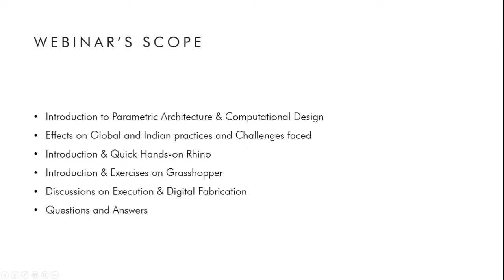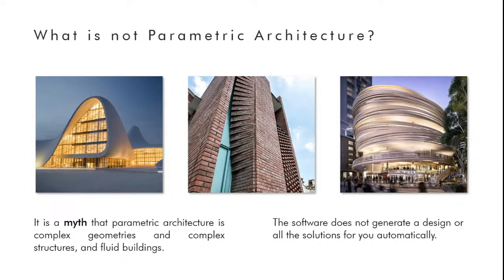When most people see buildings like the famous one in Baku, Azerbaijan by Zaha Hadid Architects, one in New Delhi, or the Guggenheim Museum, the forms of these buildings become synonymous with parametric architecture and computational design. But the question is — is it the building that is parametric, or the form, or is it something entirely different? There is a very big myth associated with this design style.